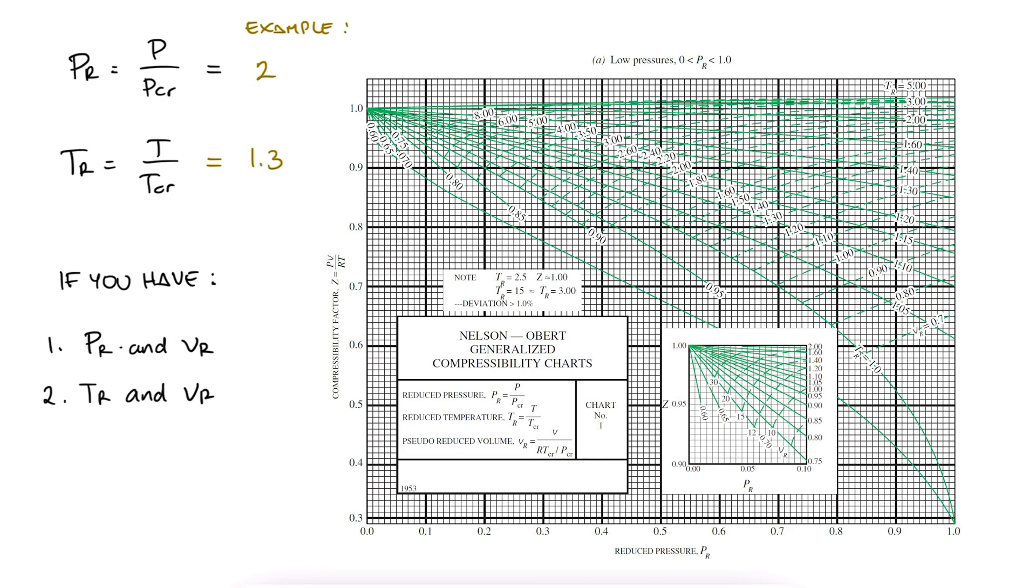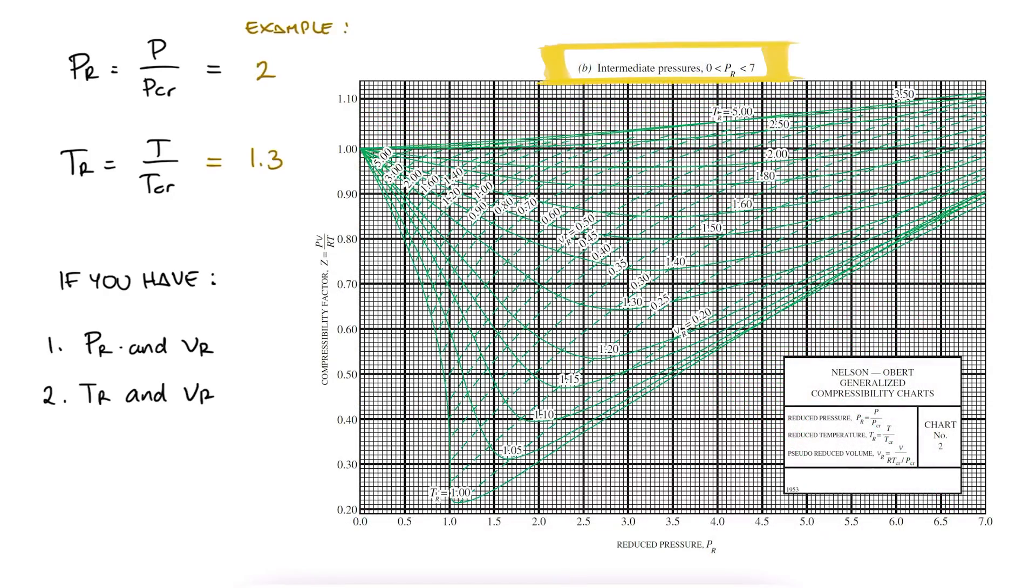If you have TR and V, you use the TR lines and the reduced volume lines. And, important to note here, is that there is really two of these charts. One for low pressures, and one for intermediate pressures.